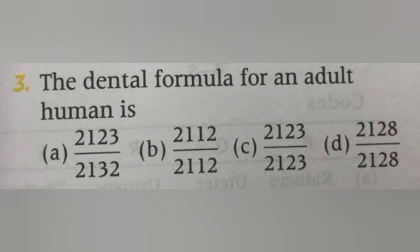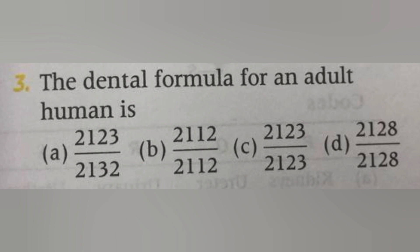Next, the dental formula of an adult human is: A. 2-1-2-3, B. 2-1-1-2, C. 2-1-2-3 / 2-1-2-3, D. 2-1-2-8. The answer is C: 2-1-2-3 / 2-1-2-3, giving a total of 32 teeth.